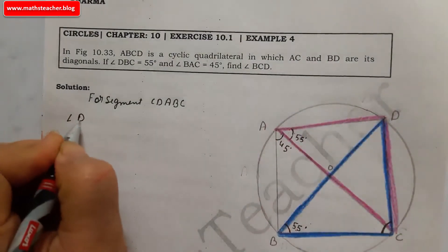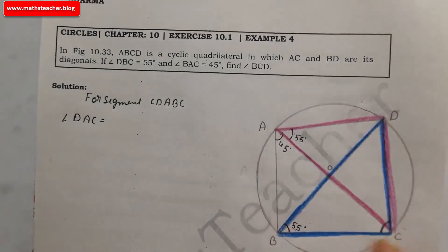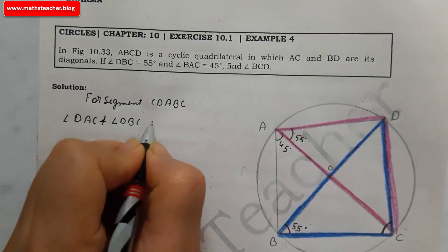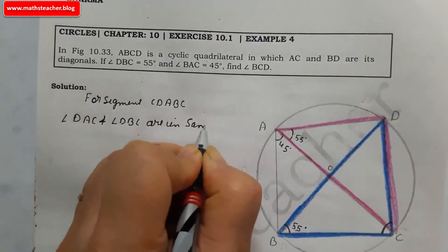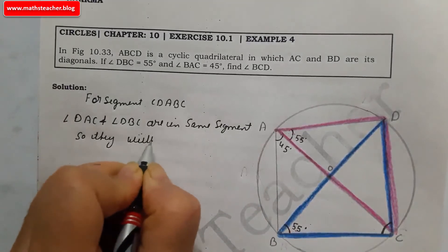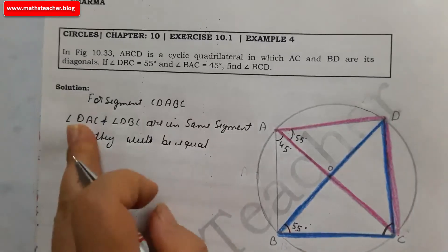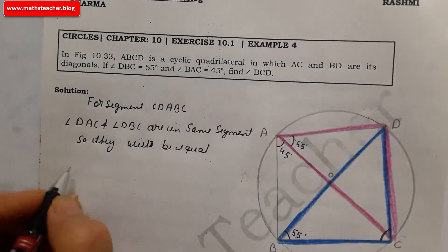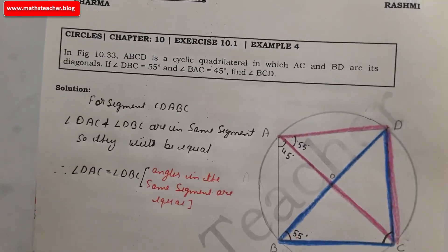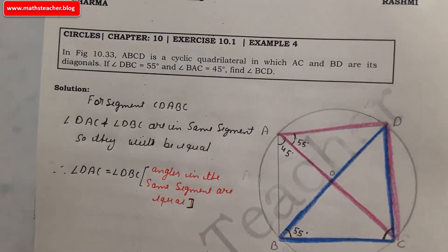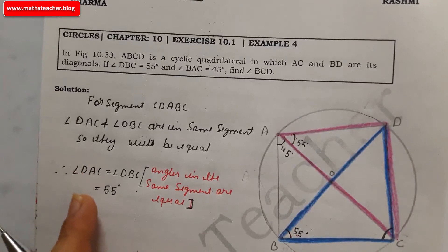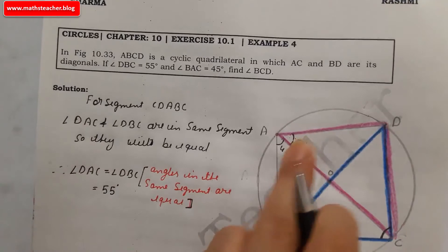Angle DAC equals angle DBC, since angles DAC and DBC are in the same segment, they will be equal. Therefore, angle DAC equals angle DBC. The reason to write here: angles in the same segment are equal. So angle DAC equals 55 degrees, since angle DBC is 55 degrees.